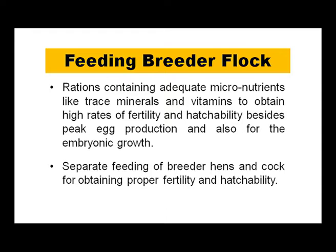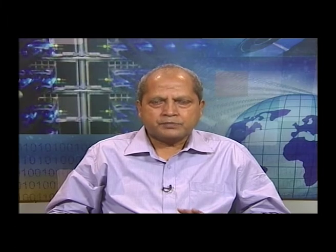Rations must contain adequate micronutrients — including trace minerals such as iodine, manganese, zinc, and copper — and vitamins such as vitamin B2, vitamin B6, vitamin B12, and folic acid. Breeder rations should contain adequate micronutrients, trace minerals, and vitamins to obtain high rates of fertility and hatchability, besides peak egg production and for embryonic growth.